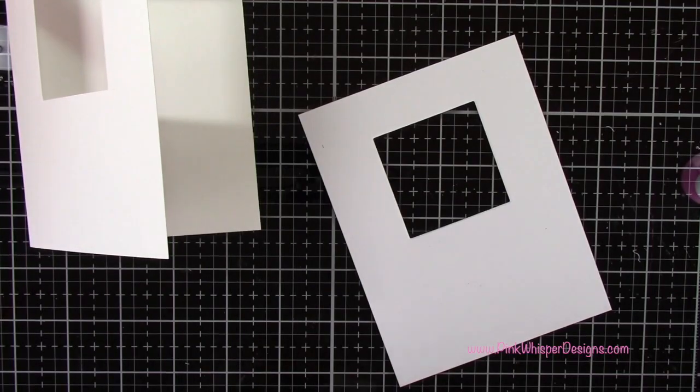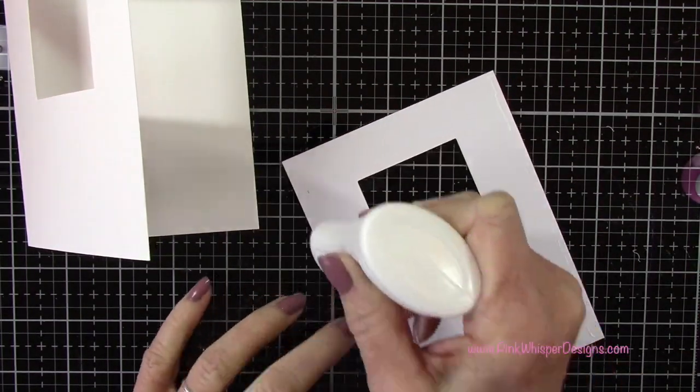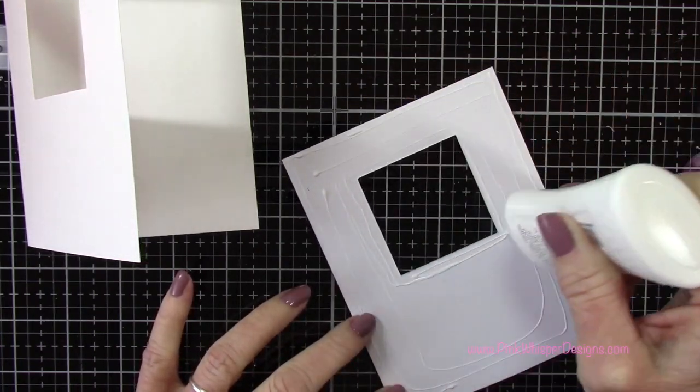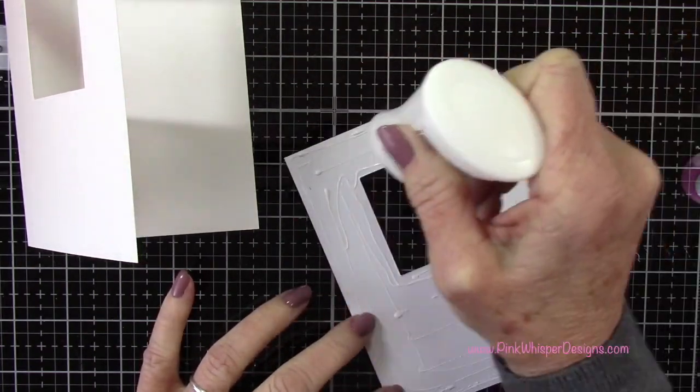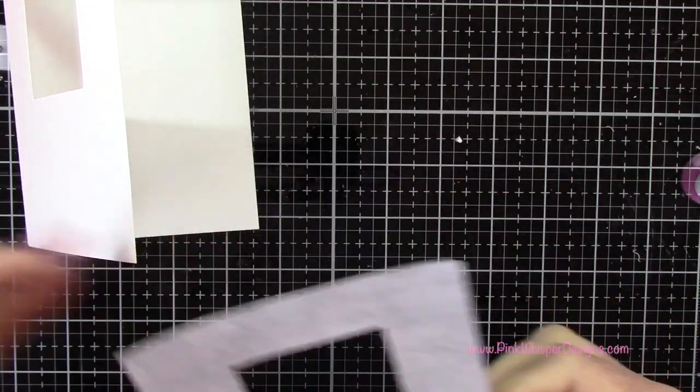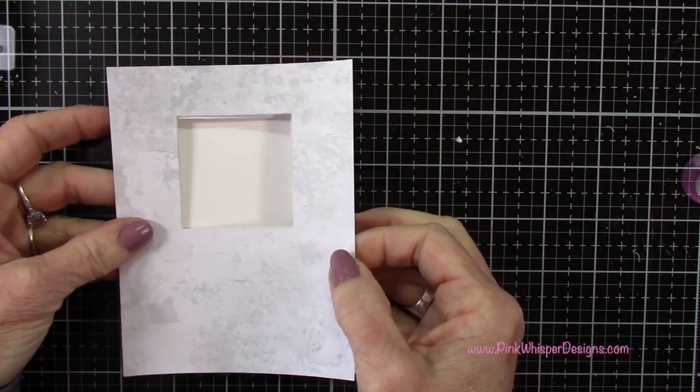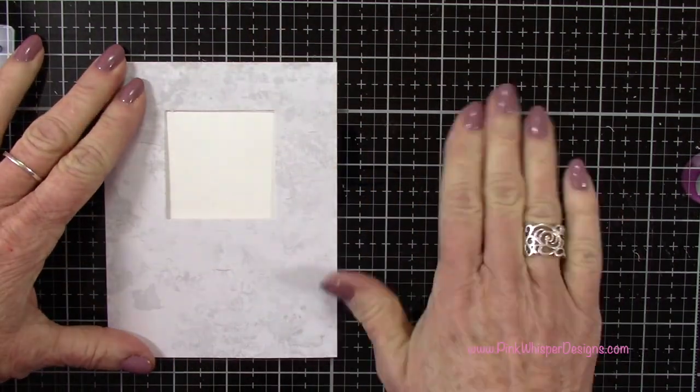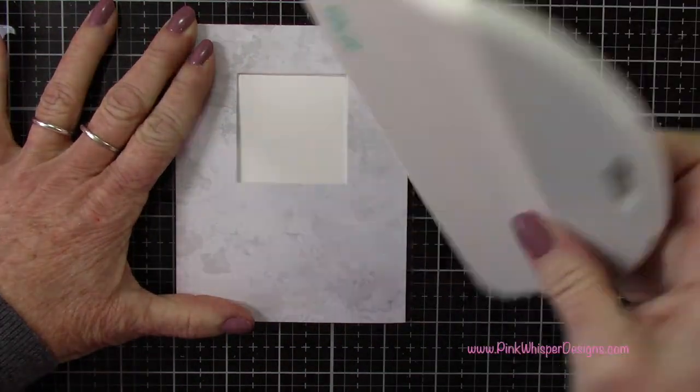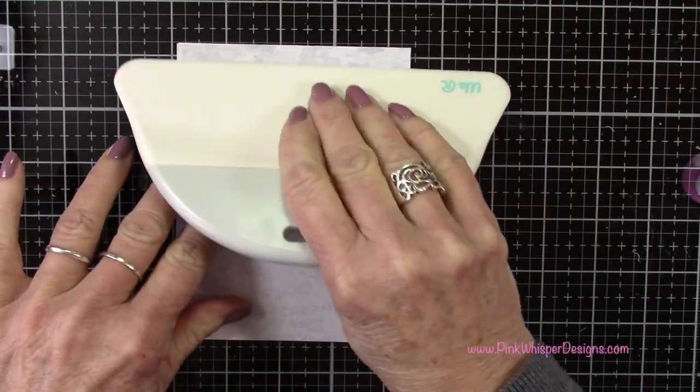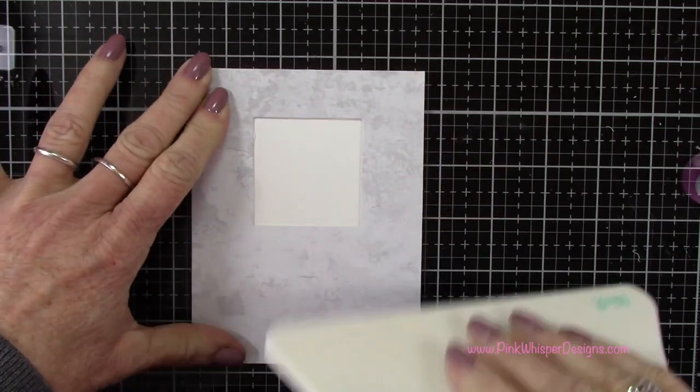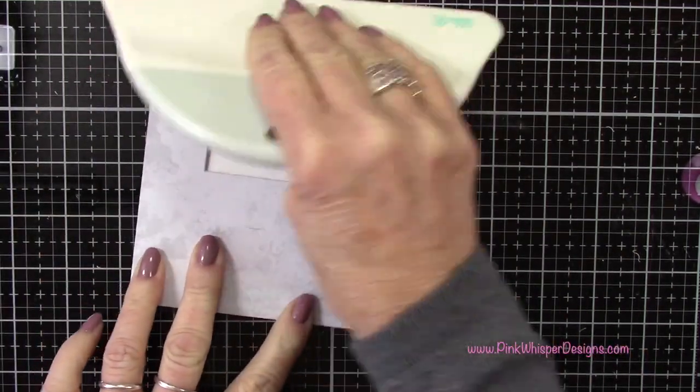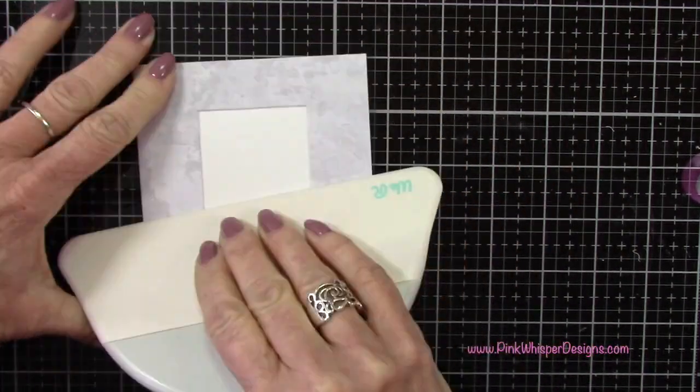Now that that's all set I can go ahead and glue these two panels together. I'm just going to add plenty of glue back here and those two panels will line up perfectly. I'm going to grab my bone folder here just to press that out. I will list all the supplies I'm using today down at the bottom and also on my blog as well.